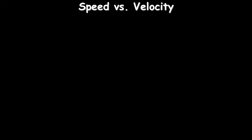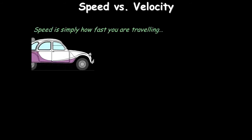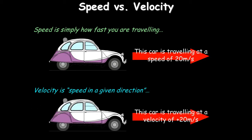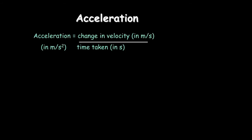When was the object traveling fastest? You're looking for the steepest line — that's between 40 and 60 seconds. Speed is simply how fast you are traveling; a car might travel at 20 meters per second. To describe velocity you need to indicate direction, so you add a plus sign. If the car goes in the opposite direction, it becomes minus 20 meters per second. Velocity describes direction as well as speed.